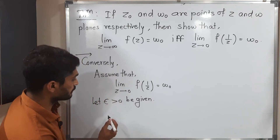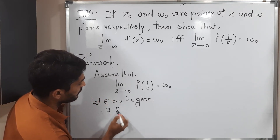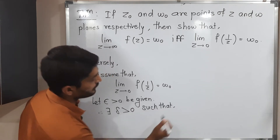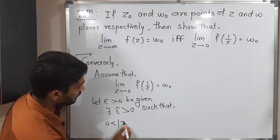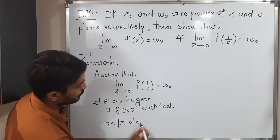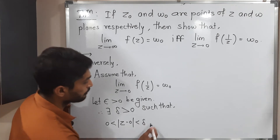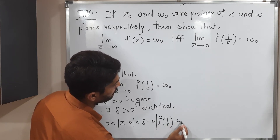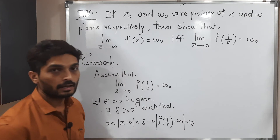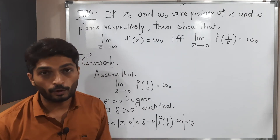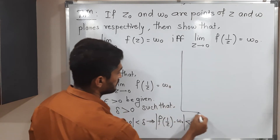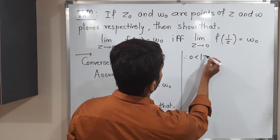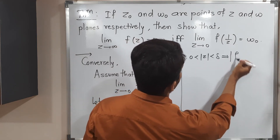By definition of limit, there exists delta greater than 0 such that 0 less than mod(z minus 0) less than delta implies mod f(1/z) minus w₀ less than epsilon. Since z minus 0 is just z, this becomes: 0 less than mod z less than delta implies mod f(1/z) minus w₀ less than epsilon.